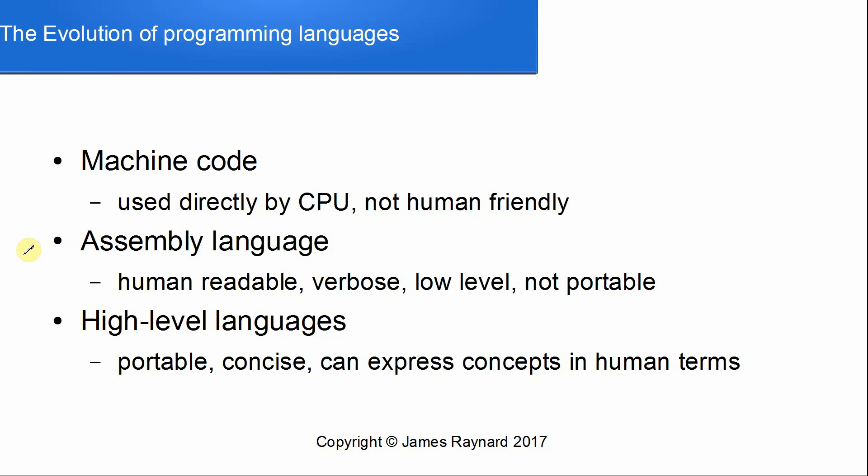Assembly language is a lot easier for humans to work with, but the disadvantages are that it's pretty verbose — opening a file, for example, takes quite a lot of assembly instructions. It's very low level, oriented towards thinking the way that CPUs think and not the way humans think. The big problem is it's not portable, because the assembly language is different for every CPU. So if you wanted to write an assembly language program and then use it on a different computer, you basically had to rewrite the program, which takes a lot of time.